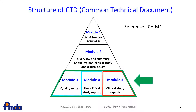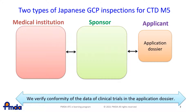PMDA inspects modules 3 through 5 to check data integrity and compliance with GCP or GLP. This is a GCP inspection conducted by PMDA. PMDA conducts two kinds of GCP inspections, namely on-site inspections and document-based inspections.